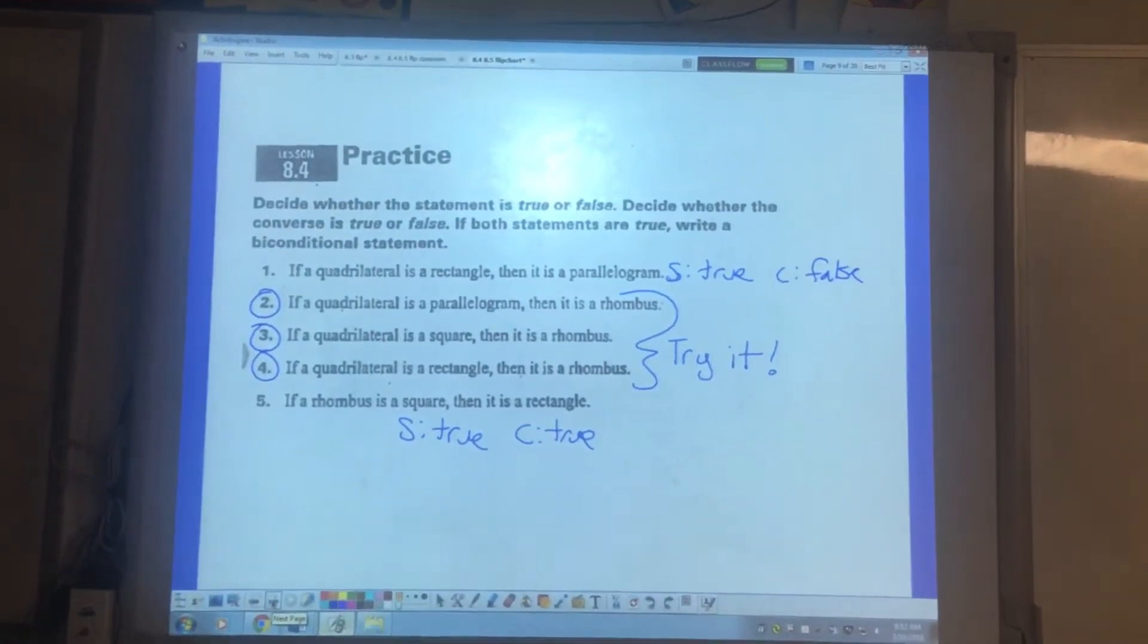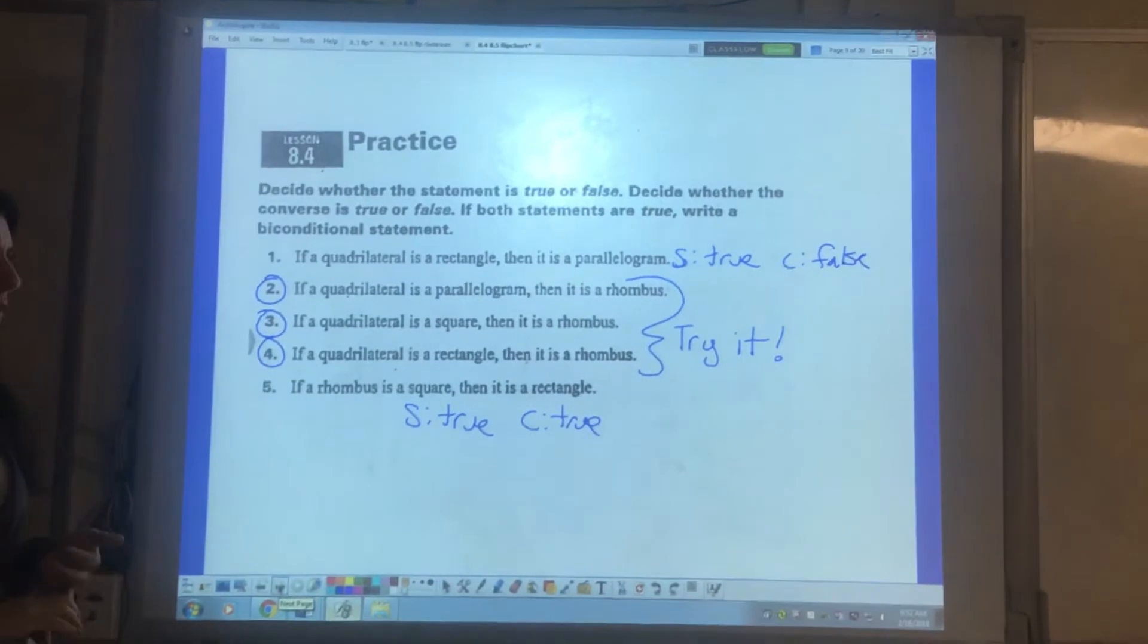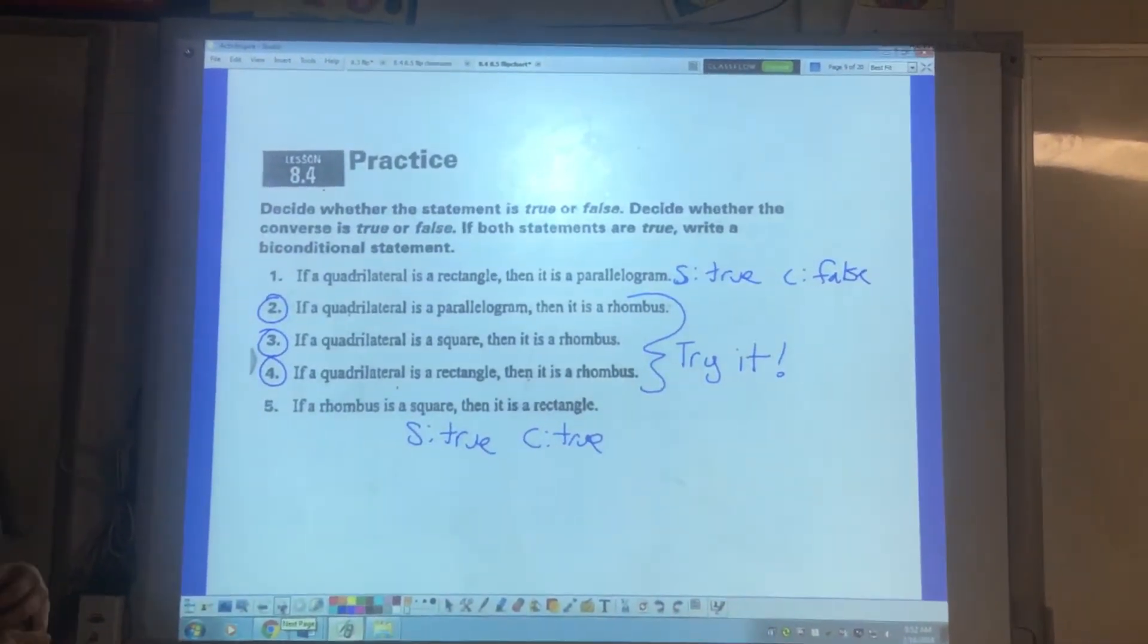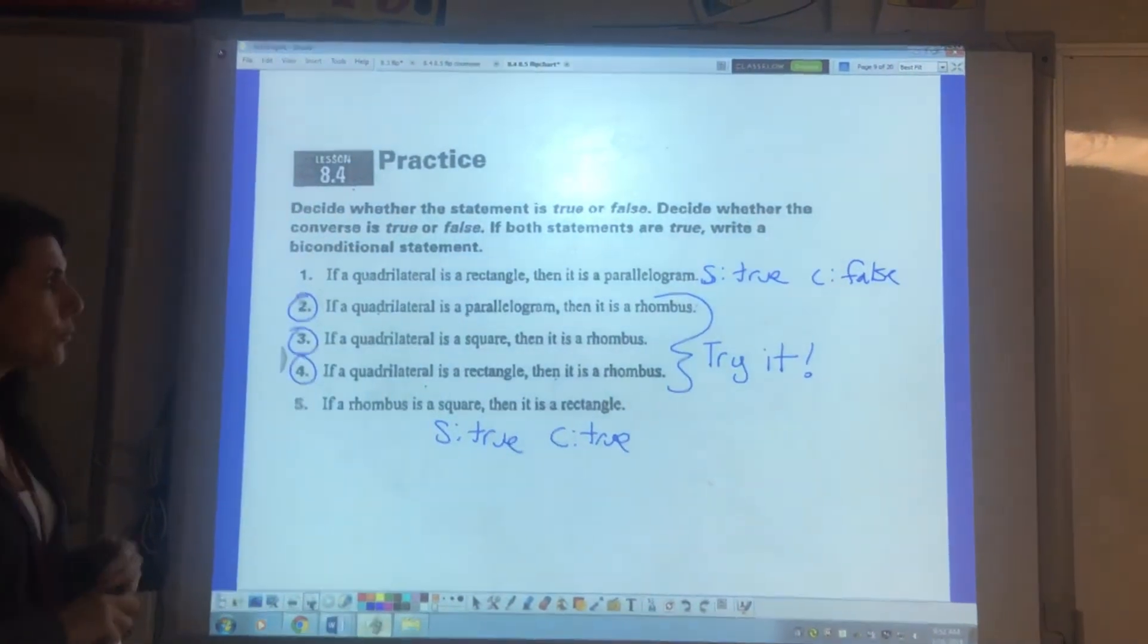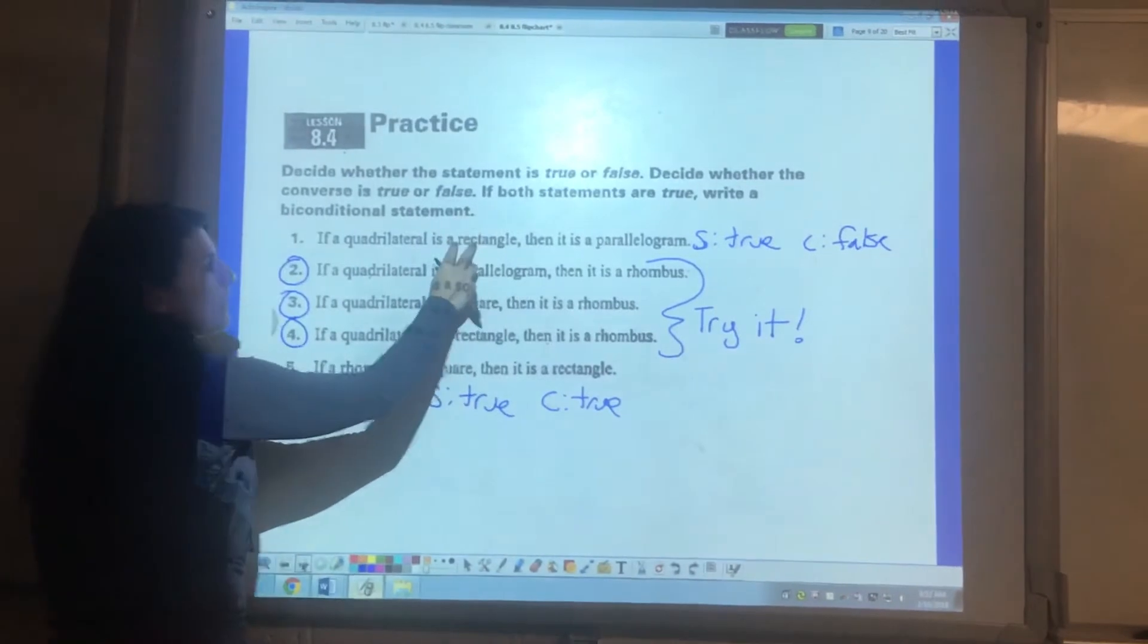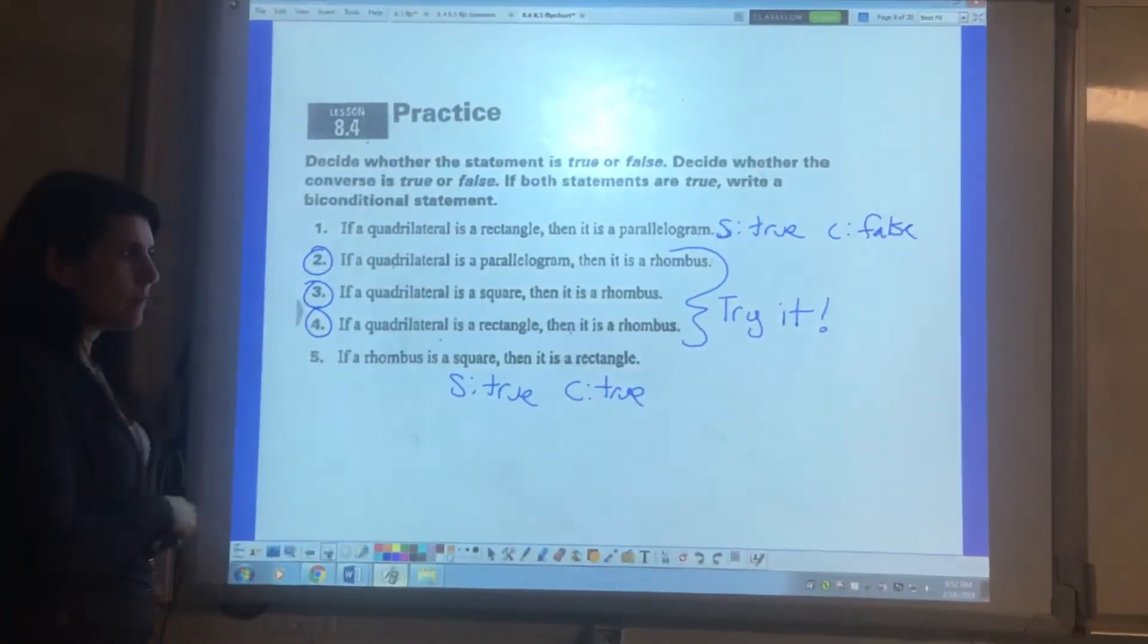This asks you to decide if the statement is true or false and if the converse is true or false. Number one says if the quadrilateral is a rectangle then it is a parallelogram. That statement is true. The converse would be if the quadrilateral is a parallelogram then it is a rectangle which is a false statement.